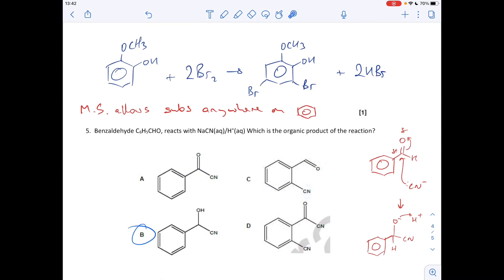And the final question is a multiple choice question. Benzaldehyde reacts with a mixture of NaCN and H plus aqueous, which is the organic product? You'll notice I've knocked up the mechanism there just to show why the answer is B.